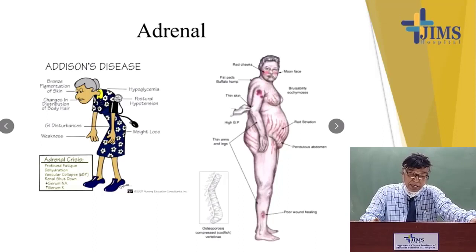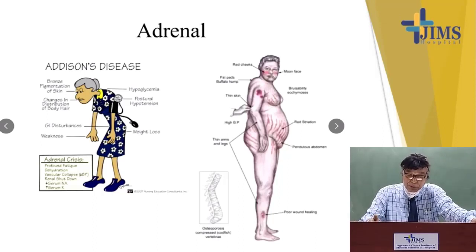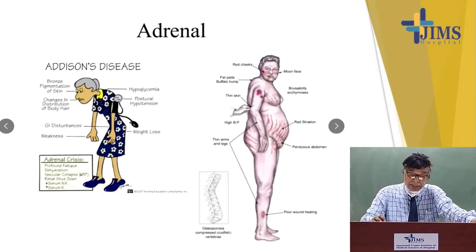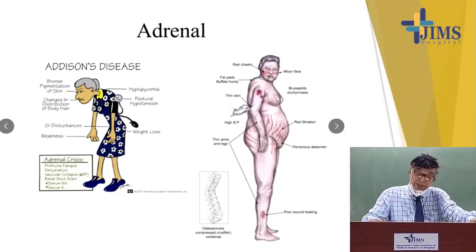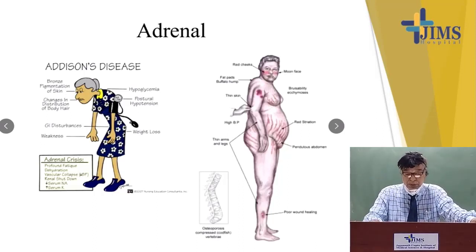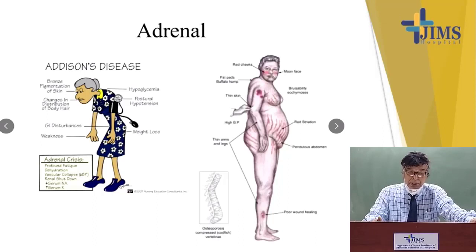There is also changed hair distribution. Persistent postural hypotension, hypoglycemia, and weight loss are also features. Most commonly, both primary and secondary Addison's disease present with an adrenal crisis: profound fatigue, dehydration, vascular collapse, renal shutdown, recurrent vomiting, and abdominal pain — features of hypocortisolism. Any patient with persistent vomiting and low blood pressure that cannot be correlated with the amount vomited, you must think of Addison's disease, either primary or secondary.